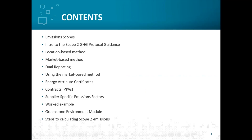The contents we're going to cover today: we're going to review what the emissions scopes are and put things into context before discussing the scope 2 GHG protocol guidance. Then we'll talk about the location-based method compared to the market-based method and how these combine to make dual reporting. We'll discuss the market-based method in more detail, contractual instruments such as energy attribute certificates, energy contracts, and supplier-specific emissions factors, before going through a worked example and discussing how Greenstone's environment module can help with your reporting. Finally, we'll go over some steps towards calculating your scope 2 emissions.